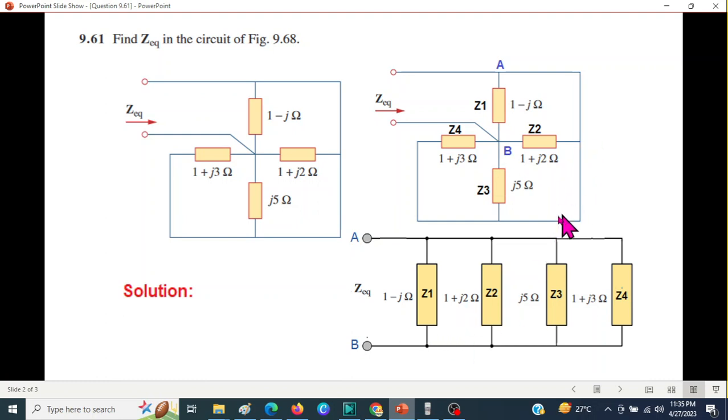Similarly, Z2 and Z3 are connected, and Z3 and Z4 are connected. So basically these impedances are in parallel, so we have to just find Z equivalent from here.